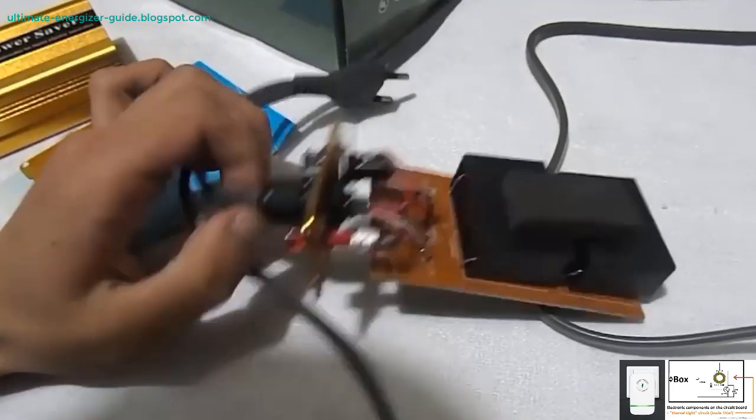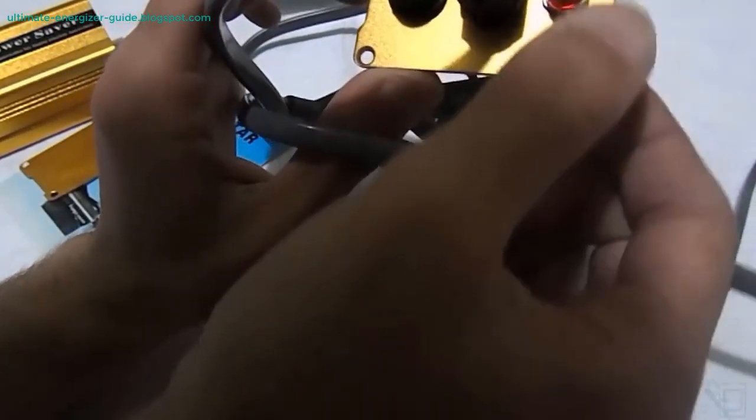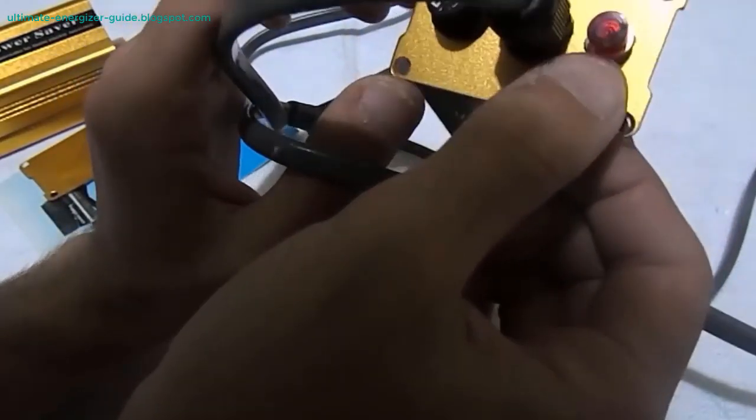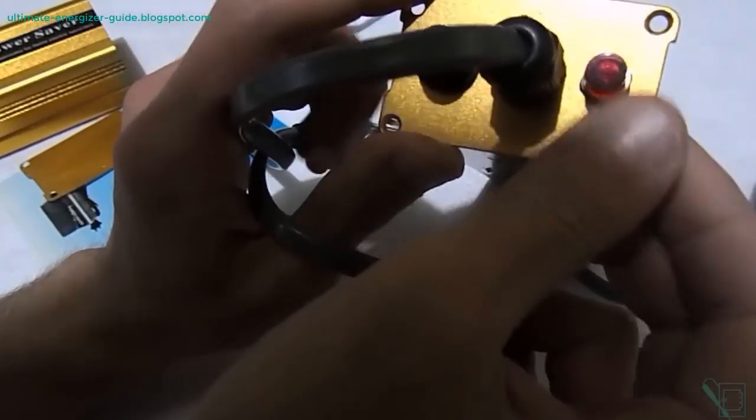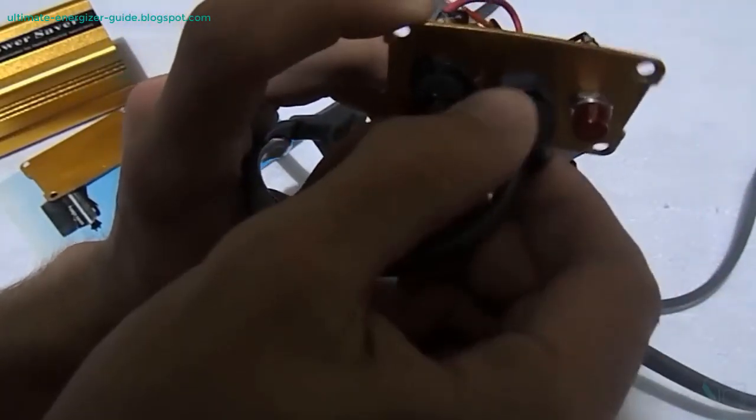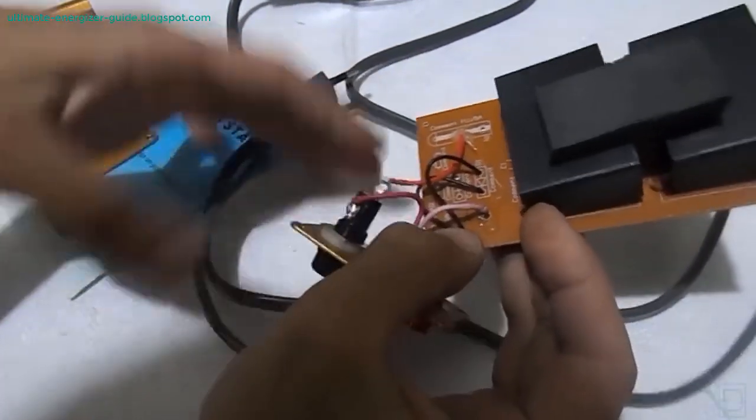The Joule thief circuit is a popular example of such a system, where a simple electronic circuit is capable of extracting energy from a seemingly exhausted battery, thereby demonstrating an efficiency that exceeds 100 percent. Proponents of over unity claim that these principles have been known and utilized in various devices for decades, but their mainstream application has been suppressed by powerful energy companies.